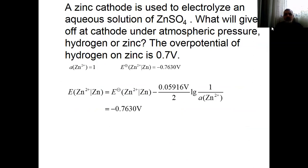Let's look at a question: aluminum cathode is used to electrolyze an acidic solution of zinc sulfate. What will be given off at the cathode under atmospheric pressure — hydrogen or zinc? The overpotential of hydrogen on zinc is 0.7 volt. Here is the calculation: the reduction potential of zinc is minus 0.763 volt — zinc is reluctant to reduce to metallic form, so the value is negative.